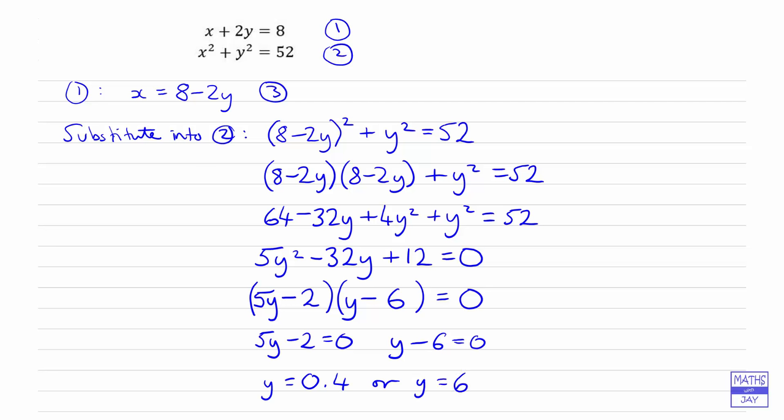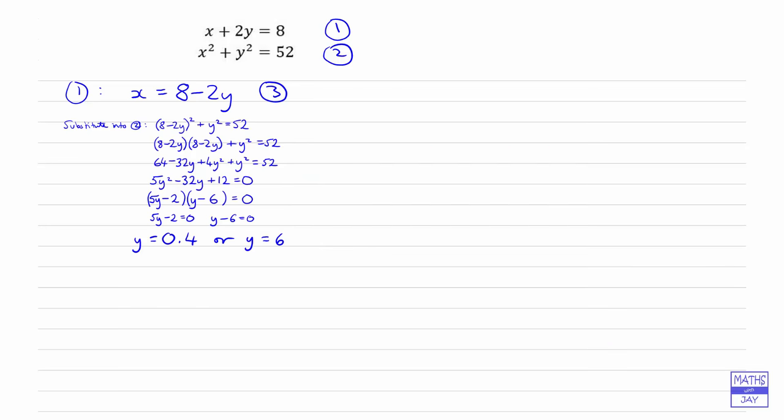That's the hard work done, but we need to remember we've got to find x as well. Now we've got to find the value of x. We know the value of y. The best equation to use now is equation 3 because that gives us x in terms of y. Let's start with y is 0.4, and so equation 3 gives us that x is 8 minus 2 times 0.4, so that's 8 minus 0.8, so that's 7.2.